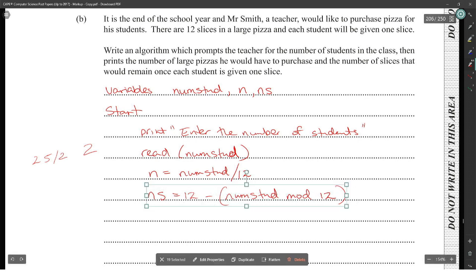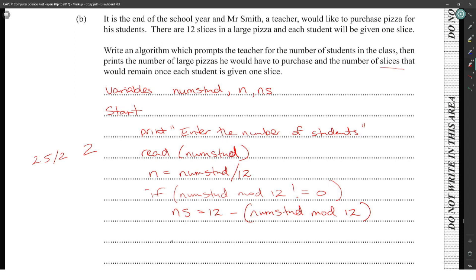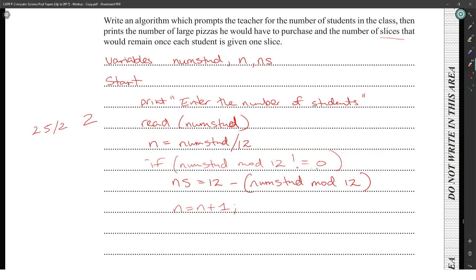The logic: calculate n = number of students divided by 12. If number of students mod 12 is not equal to zero, then calculate ns = 12 minus (number of students mod 12), and set n = n plus 1, meaning we need one extra pizza. So for 25 students, we buy three pizzas and have 11 slices left back.